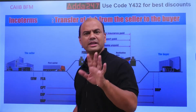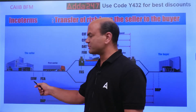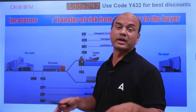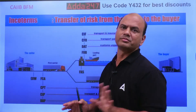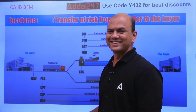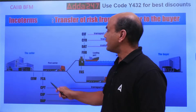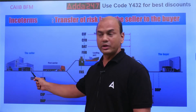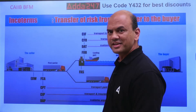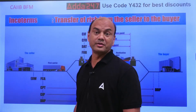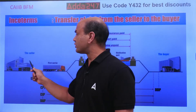There are 11 Incoterms in total. The first one is EXW — Ex Works. This means I manufacture the goods at my factory and you take them from here. This is the best Incoterm for the seller because the seller has zero risk — they just manufacture the goods and the buyer takes it from the factory.